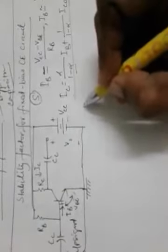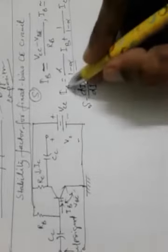If we now differentiate this equation with respect to ICO, we can get S, because S has the formula dIC by dICO. Differentiating with respect to ICO, we get 1 by (1 minus alpha), since IB is constant and alpha is also constant. So this is the expression of stability factor for fixed bias circuit.